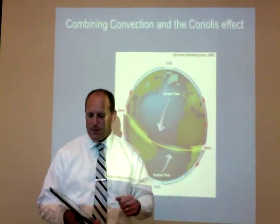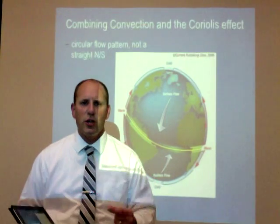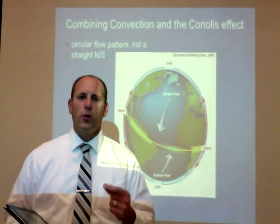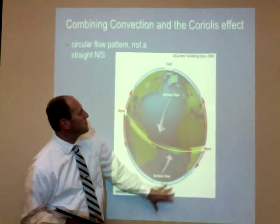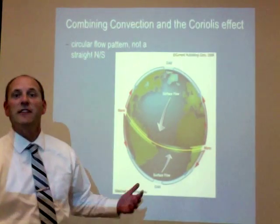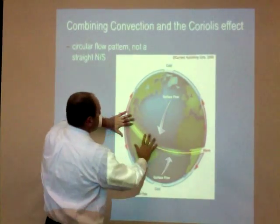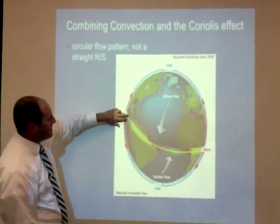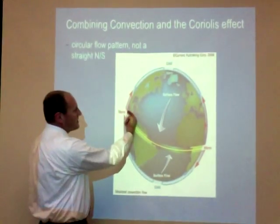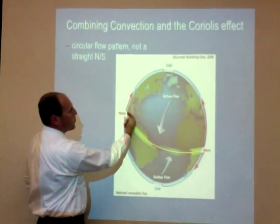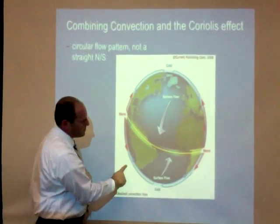If we take convection and the Coriolis effect and combine them together, it gives us a circular flow pattern — not straight north-south. Looking at this picture, you can see the convection process where warm air is heating up at the equator. Here you can see these arrows depicting warm air rising, moving away from the earth, being pushed to the north and to the south — towards the poles.